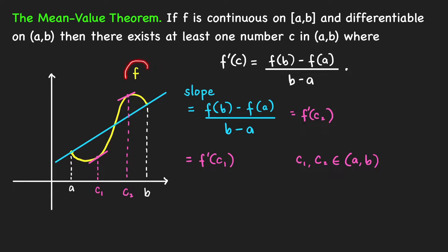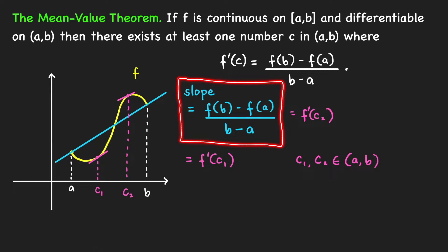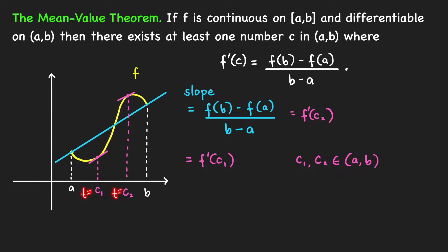Now let's give a physical interpretation of the Mean Value Theorem. Suppose the function f represents the position of a particle moving along a straight line. Then the slope of the secant line represents the average velocity during the time interval [a, b]. The Mean Value Theorem tells us there is at least one time t = c where the instantaneous velocity — the slope of the tangent line — equals the average velocity over [a, b].